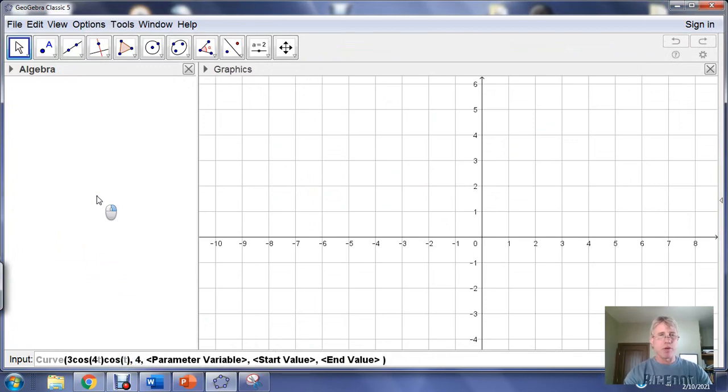Here I enter my parameterized y. It's going to be 3 cosine of 4 times theta, but we're using t for theta, and then we multiply r times the sine of theta, so sine of t. Then hit tab and type t.